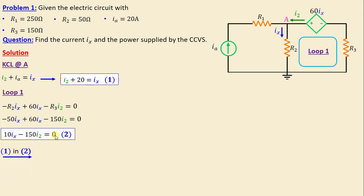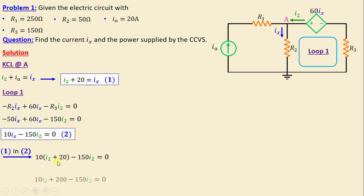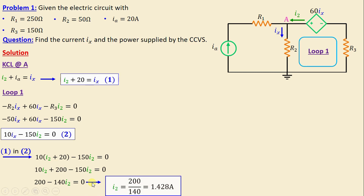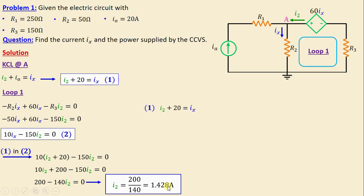By substituting equation one into equation two, we derive one equation in terms of i2. Continuing to simplify, we obtain: 200 minus 140 i2 is equal to zero. That means i2 is equal to 200 over 140, giving us 1.428 amps.